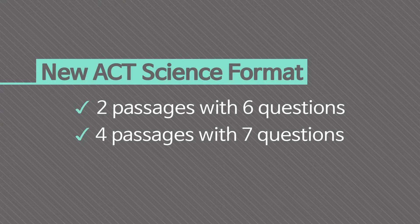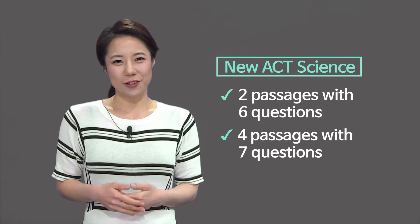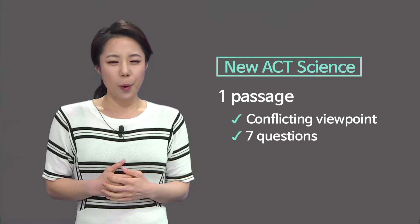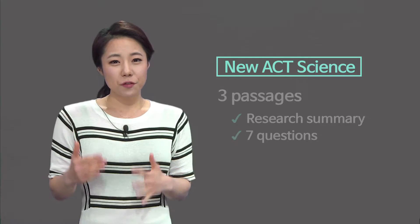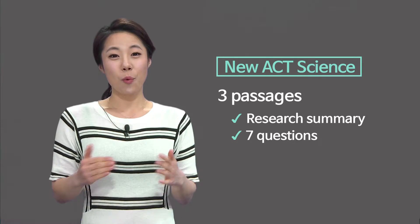Studying real ACT science tests, I found a new pattern to help you understand the test better. You will see two passages with six questions and four passages with seven questions. The four passages with seven questions include the conflicting viewpoints passage plus three research summary passages — one question was added to each to make seven. Seven times four equals 28 questions.